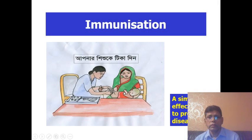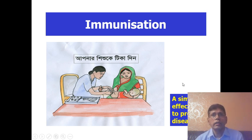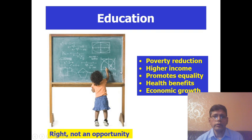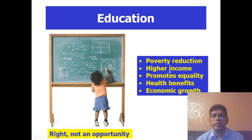Immunization: a simple and effective way to prevent diseases. If we can invent a vaccine against coronavirus, mankind will be saved — vaccination is so important. Education is a right, not merely an opportunity for the child. It reduces poverty, ensures higher income, promotes equality in life, provides health benefits, and ensures economic growth.